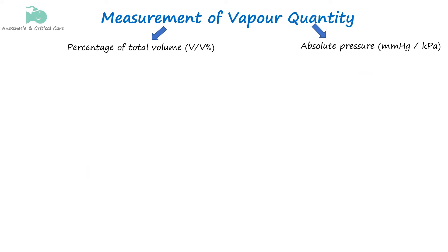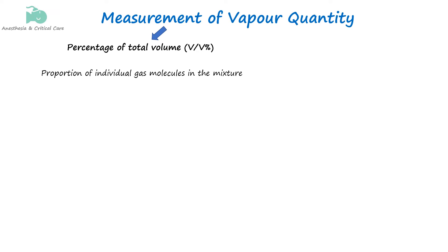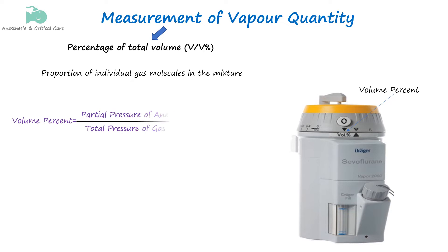Volume percent expresses the relative ratio or proportion of gas molecules in a mixture. The volume percent is a relative measure and doesn't change with pressure or temperature under normal conditions. For instance, if a gas mixture contains 2% sevoflurane, this means that 2% of the gas molecules in the mixture are sevoflurane molecules. The concentration can be determined by the setting on the vaporizer dial and also from the partial pressure measured using a gas analyzer.